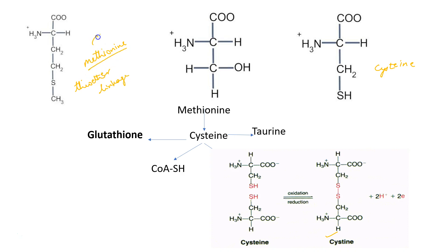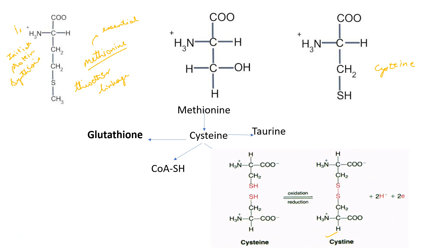Methionine is an essential amino acid and it is useful for synthesis of cysteine. Methionine is also important for initiation of protein biosynthesis.